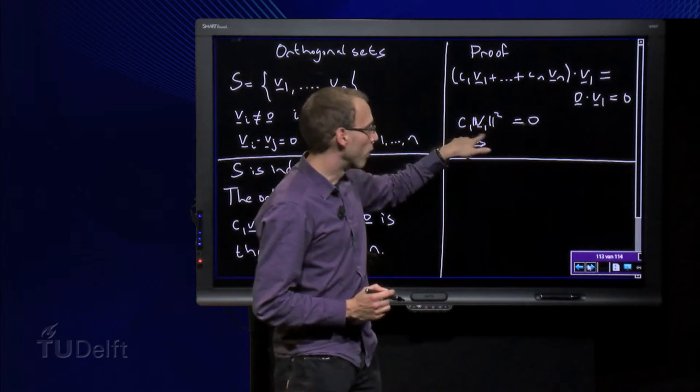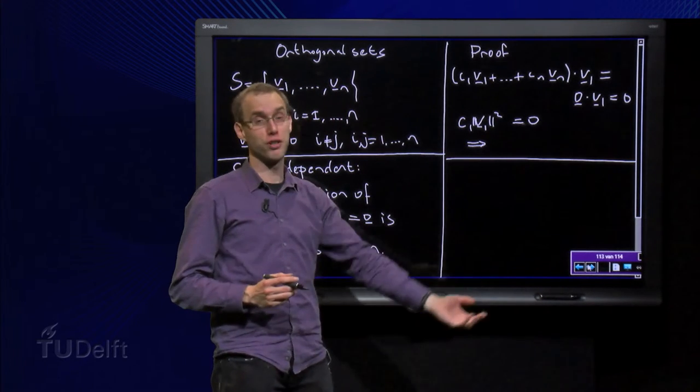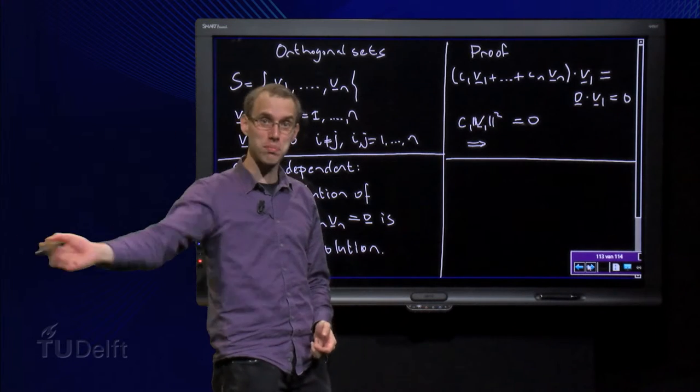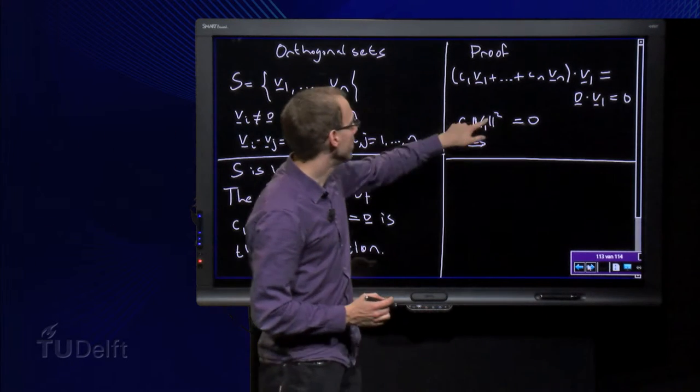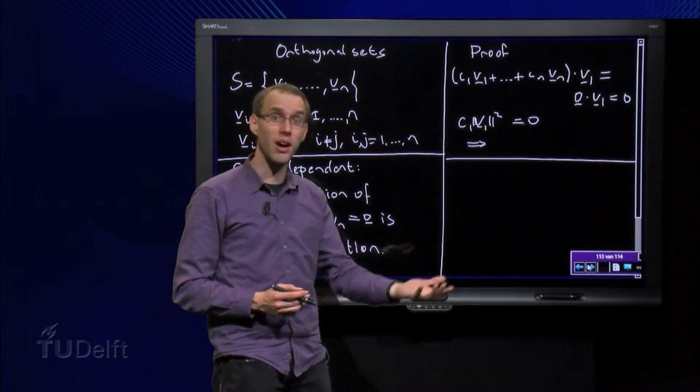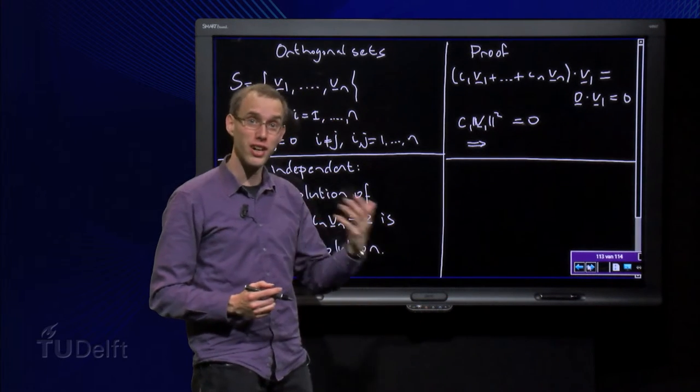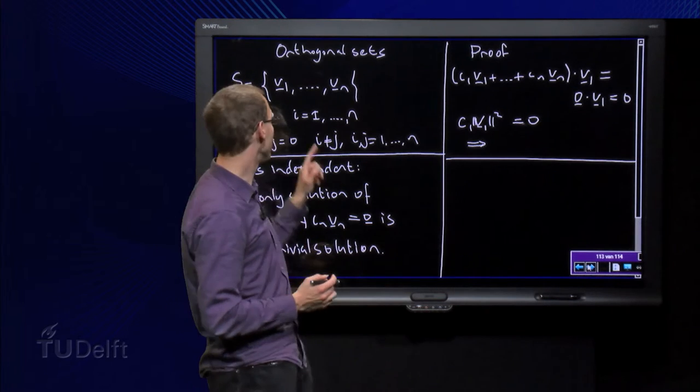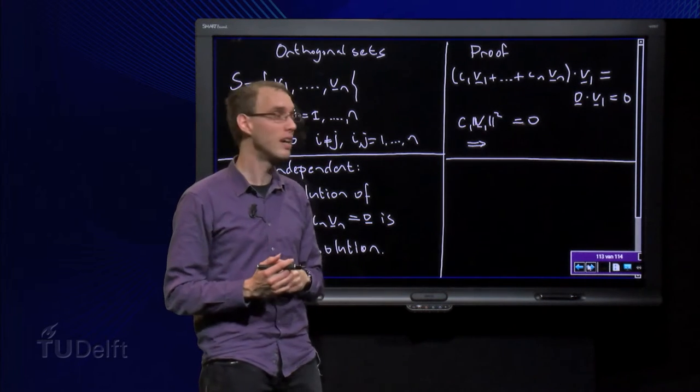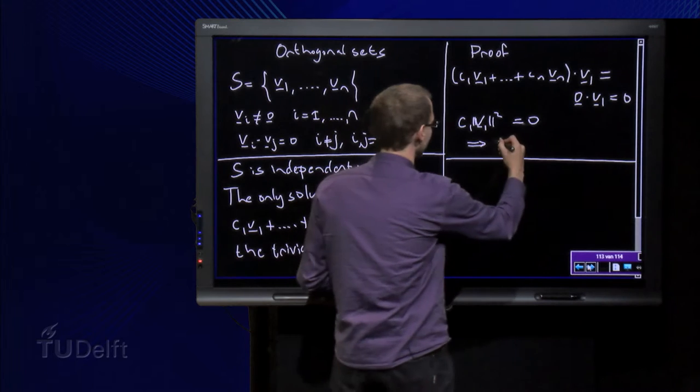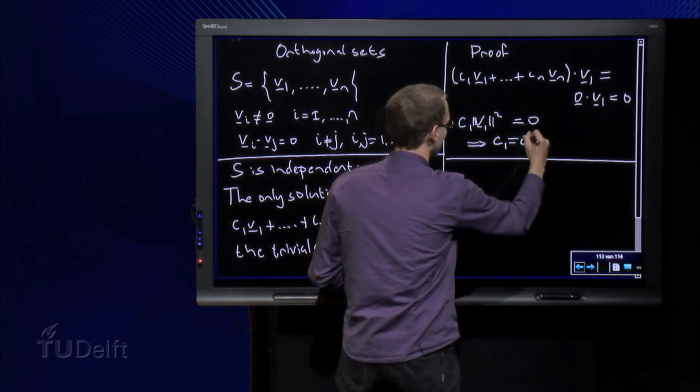So if we have that product equals zero, then either the first part has to be zero or the second part has to be zero. But if the length of V1 squared would be zero, then the length of V1 would be zero and V1 would be the zero vector. But that is not allowed by our first assumption, that means that we have C1 equals zero.